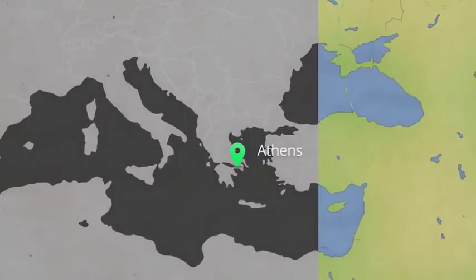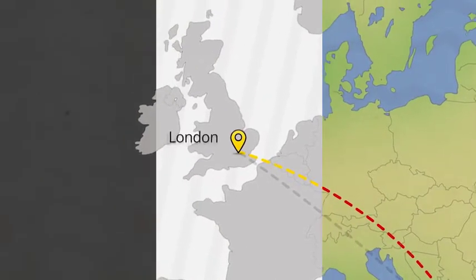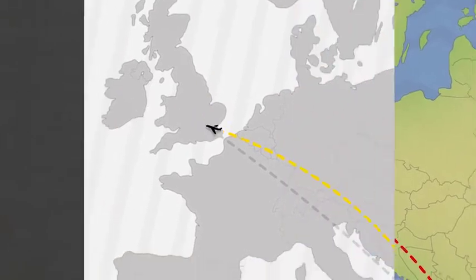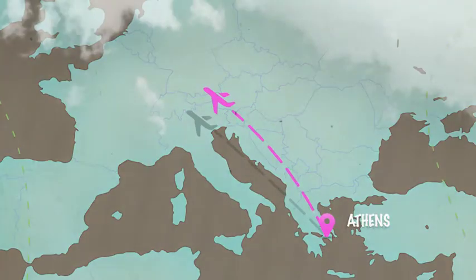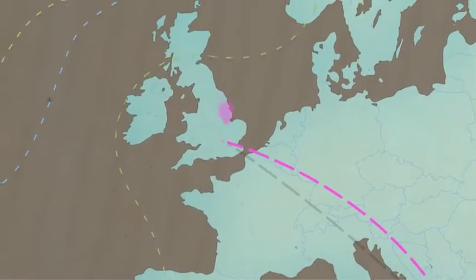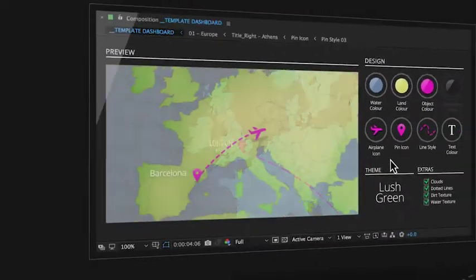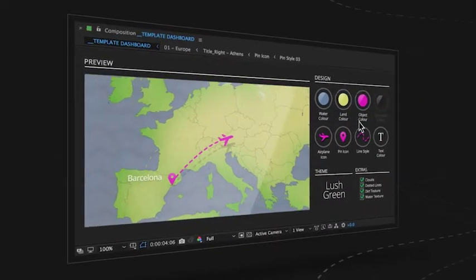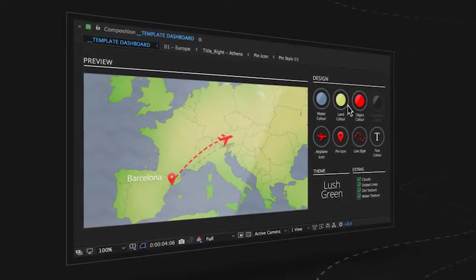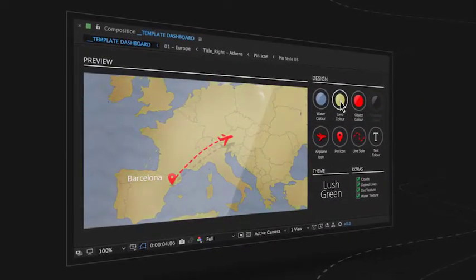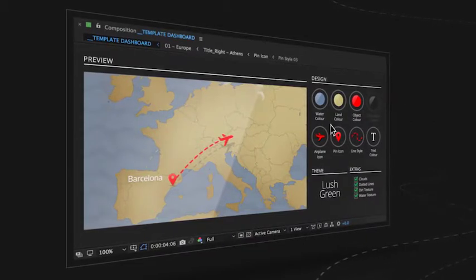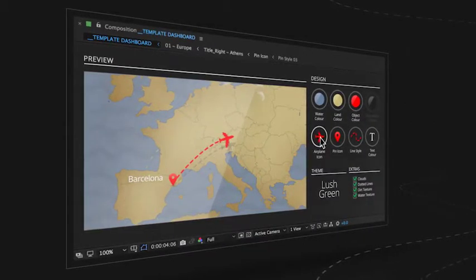Pick from one of our three pre-made visual styles, then tweak every color, line, and icon design to the smallest bit of detail to create a unique look that reflects your personal brand. And all of this is controlled through a custom-designed dashboard, providing you with a seamless experience to change any aspect of your maps.